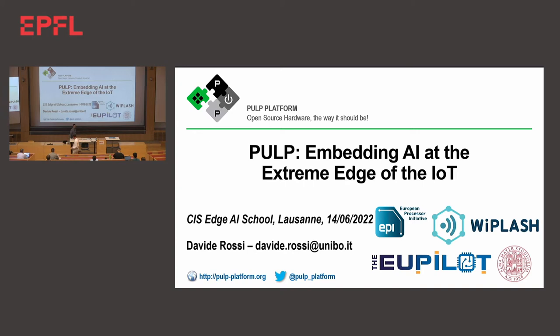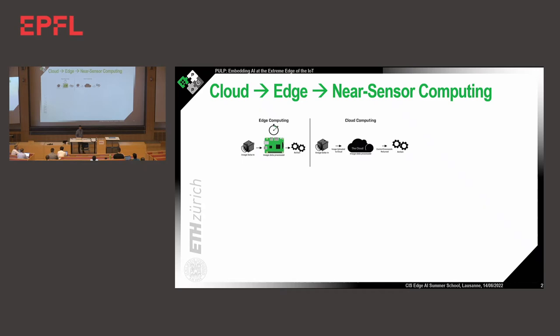Thanks for the introduction. This presentation is about PULP, an open source project started in 2013, mainly a collaboration between the University of Bologna and ETH Zurich. Since then, many other groups worldwide have contributed to the research and to building infrastructure for embedded computing. I will describe the main concepts behind the PULP platform as a computing platform for extreme edge Internet of Things applications.